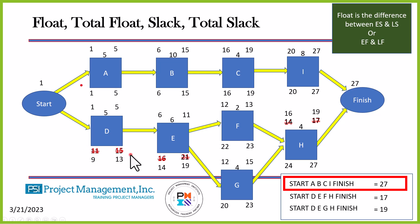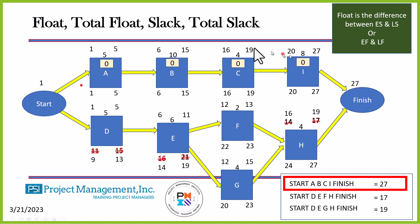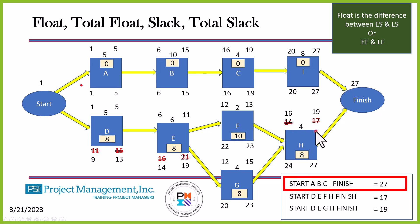Now I have established Early Start and Early Finish for each activity. I subtract Early Start from Late Start to find the float. For the critical path activities: float is zero. Float of D: Late Start 9 minus Early Start 1 equals 8. Float of E is 8. Float of F: 22 minus 12 equals 10. Float of H: 24 minus 16 equals 8. Float of G: 20 minus 12 equals 8. That's how we calculate float.